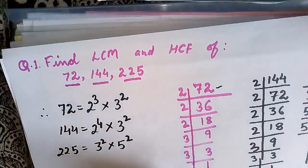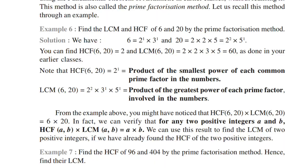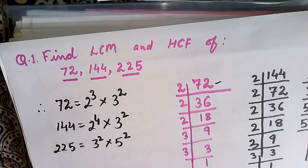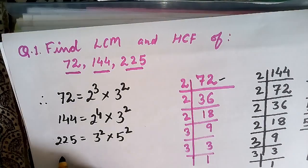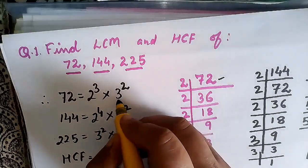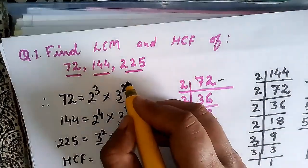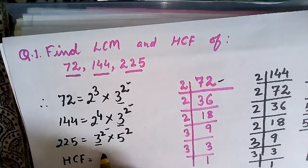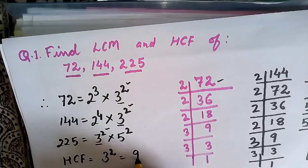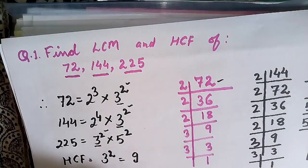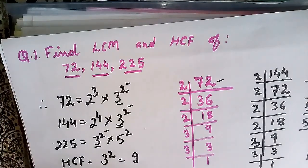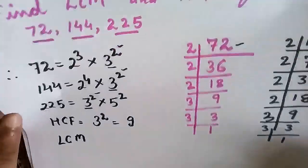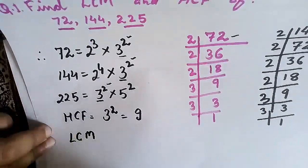Now let us apply the properties again. Product of smallest power of each common prime factor is the HCF. The common factor across all three numbers is 3, and its power is 2 everywhere, so HCF = 3² = 9. For LCM, we take the greatest power of each prime factor involved in the factorization.